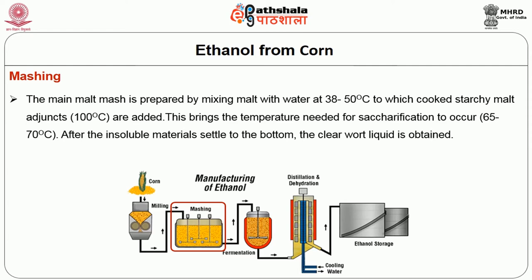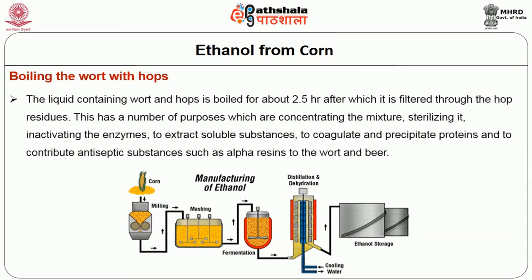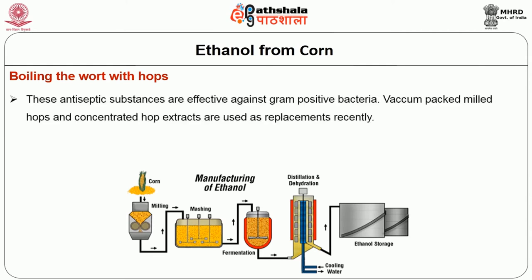The main malt mash is prepared by mixing malt with water at 38 to 50 degrees centigrade, to which cooked starchy malt adjuncts are added at approximately 100 degrees centigrade, bringing the temperature needed for saccharification to a range of 65 to 70 degrees centigrade. After insoluble materials settle, the clear wort liquid is obtained. The next step is boiling the wort with hops for about 2.5 hours, after which it is filtered through the hop residues. This serves to concentrate the mixture, sterilize it, inactivate enzymes, extract soluble substances, coagulate and precipitate proteins, and contribute antiseptic substances such as alpha resins to the wort and beer.